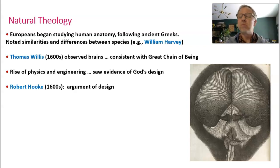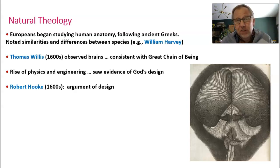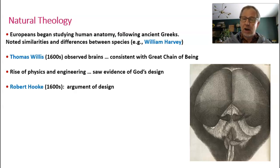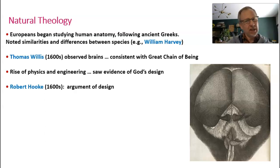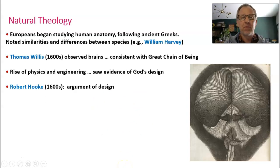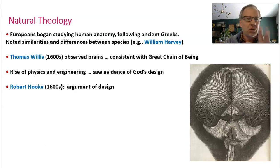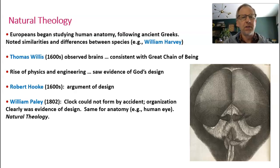During this time period — the 1500s and 1600s — physics was booming as a science. People were learning a great deal about the mechanics of the physical world, and engineering was booming because of underlying physics principles. This brought people to start thinking about animal bodies as being engineered by God, as evidence of God's design. Robert Hooke, known as the discoverer of cells in the 1600s, was trained as a physicist and engineer, and he very much argued that animal anatomies are a testament to God's design.